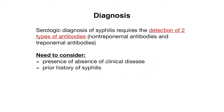Regardless of which sequence is used, diagnosing syphilis requires that two different serologic tests be positive. This is because both treponemal and non-treponemal tests can have false negatives and false positives, making the diagnosis challenging. Diagnosing syphilis requires not only looking at lab results but considering the clinical context, such as the presence or absence of clinical disease as well as any prior history of syphilis.